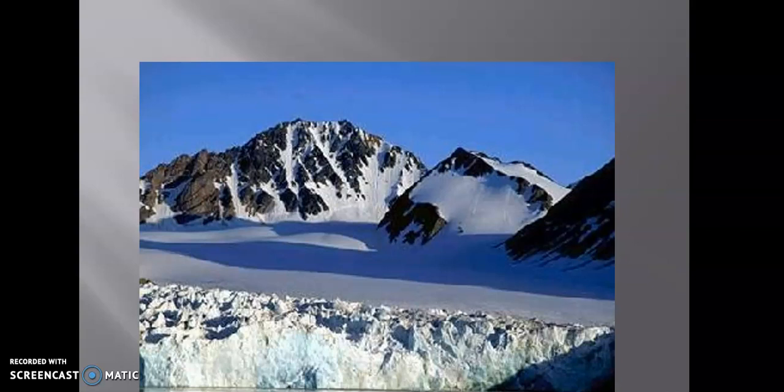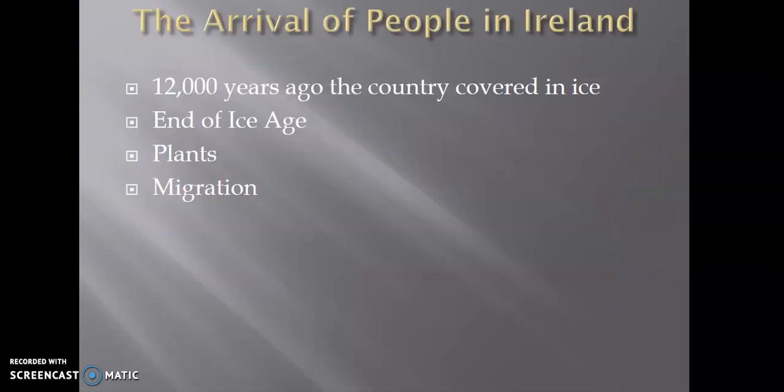What you see here is a picture of snow and ice — what you'd associate with skiing resorts or arctic caps. But this is what Ireland would have looked like roughly around 12,000 years ago, so it was fairly uninhabitable. When the Ice Age ended, there's evidence from archaeology of various plants developing, and with evidence of plants comes evidence of the sustainability of life. With the sustainability of life, migration would eventually happen to Ireland.